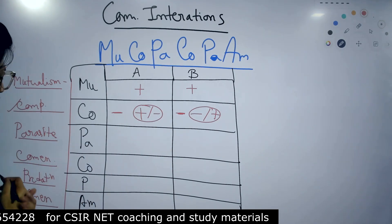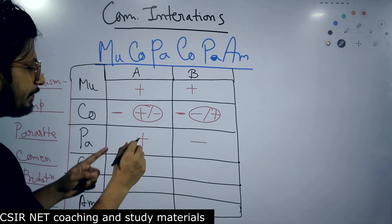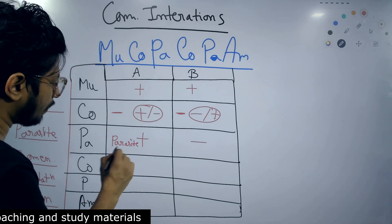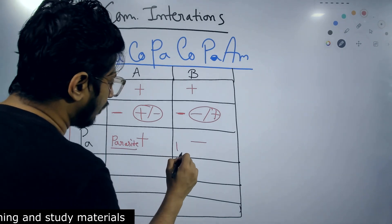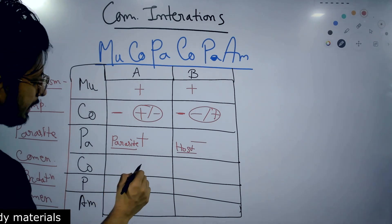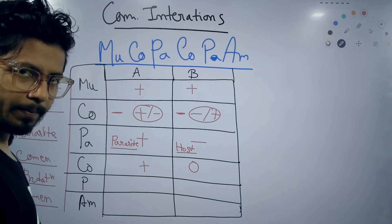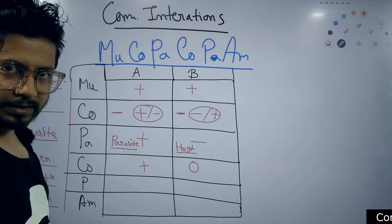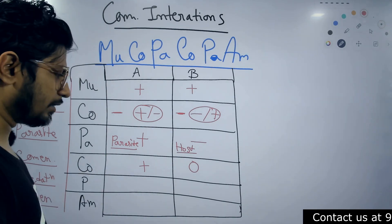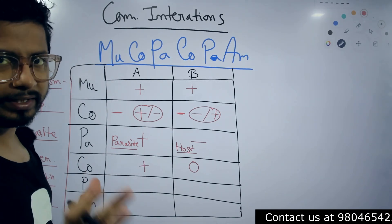Next we have parasitism — one gets the benefit, the other one is harmed. The one that gets the benefit is the parasite; it gets the benefit from the host. Next is commensalism — one gets the benefit, but the other one is unharmed. That is different from parasitism, where the other one is harmed. In commensalism, the other species is simply unaffected.